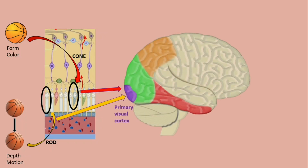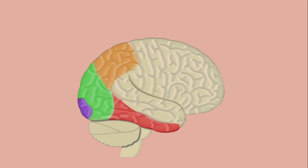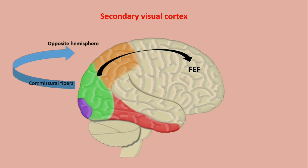The cone stream is projected to the secondary visual cortex extending into the temporal lobe, and the rod stream projects to the parietal lobe, making up the magnocellular system or ventral and dorsal pathways. The secondary visual cortex is also associated with the frontal eye field, with the opposite hemisphere through commissural fibers, and with cranial nerves.